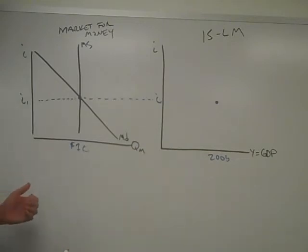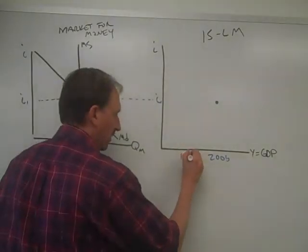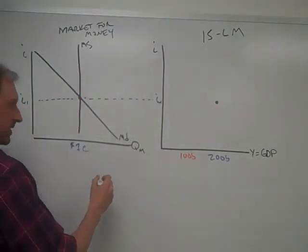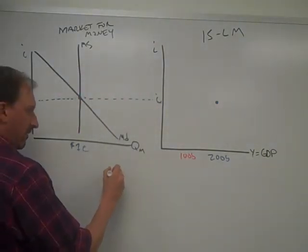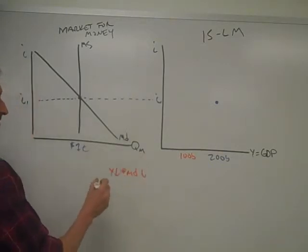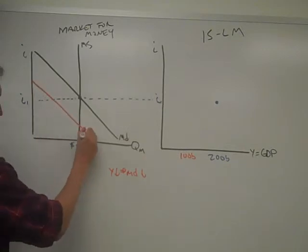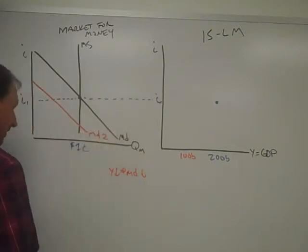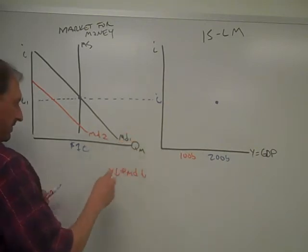So what happens if GDP fell, for example, to $100 billion? Well, then we know based on rules that we'll cover in class that if Y falls, then MD, we demand less money. So if we demand less money, then we can draw a new money demand curve. And we'll call that MD2. Just to be complete, let's call this MD1.